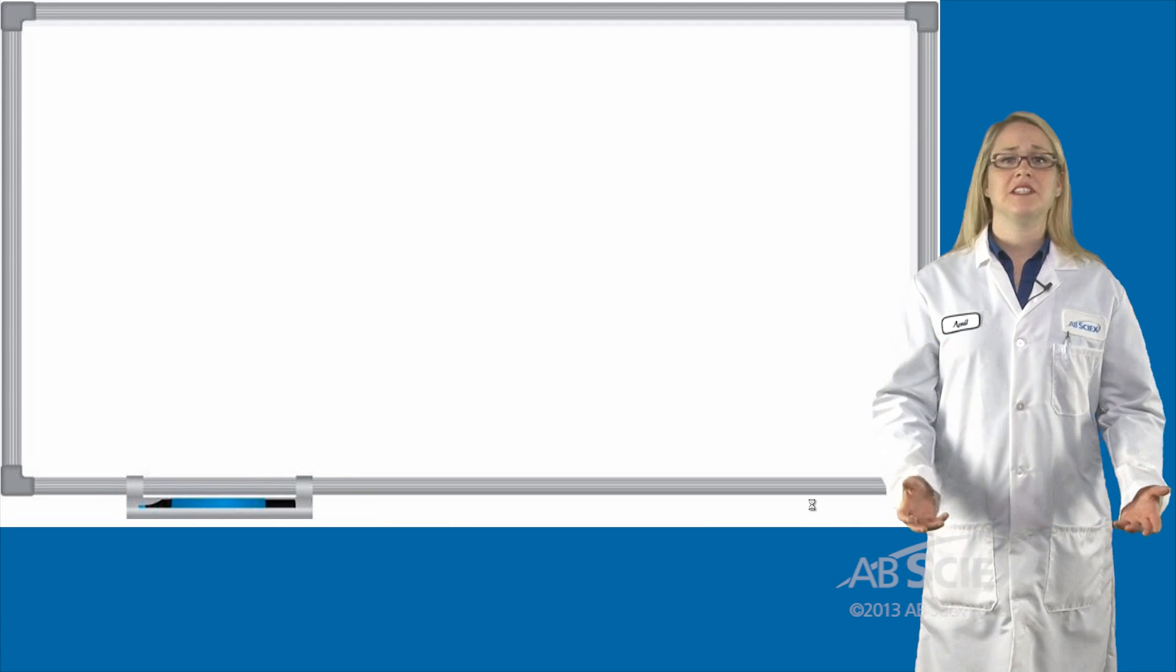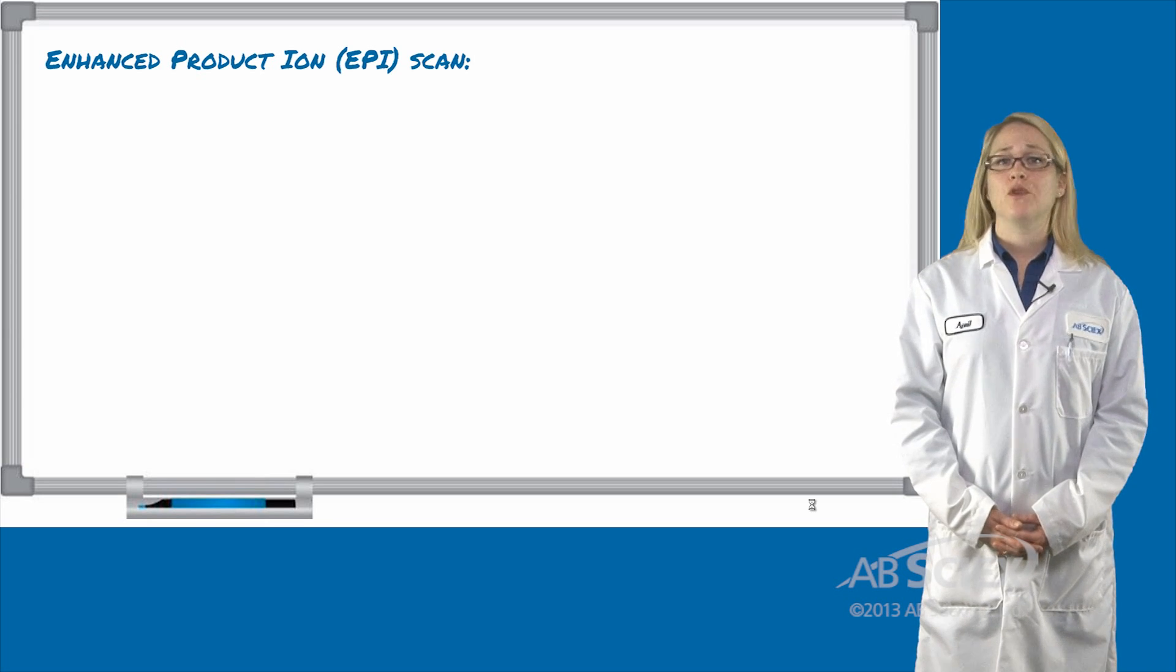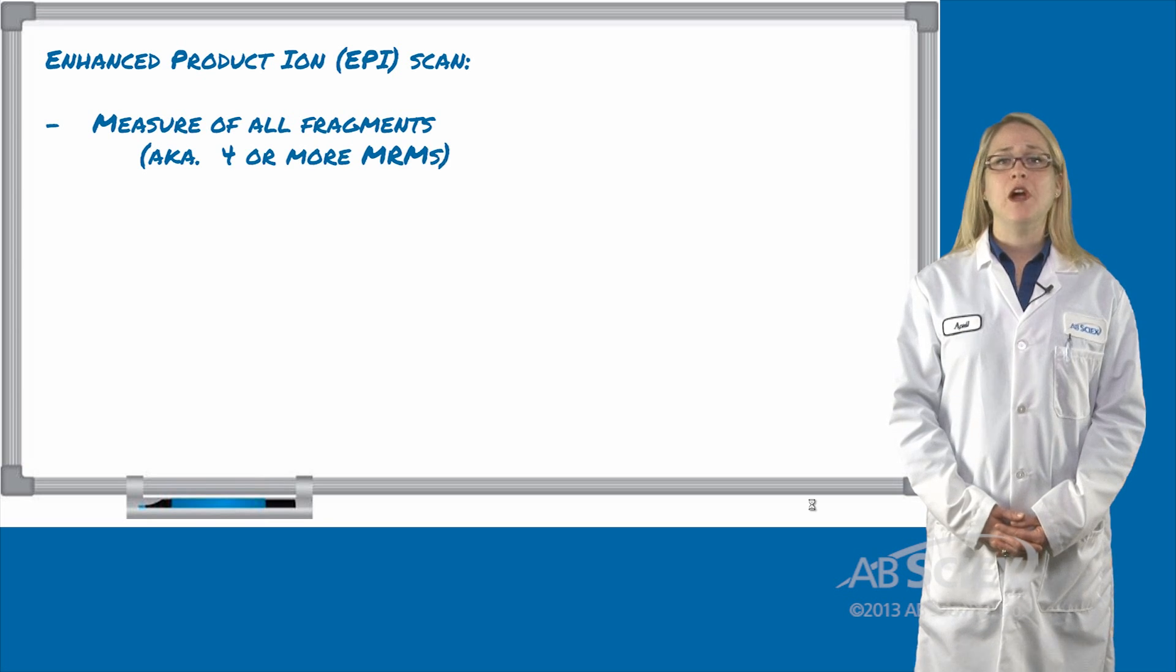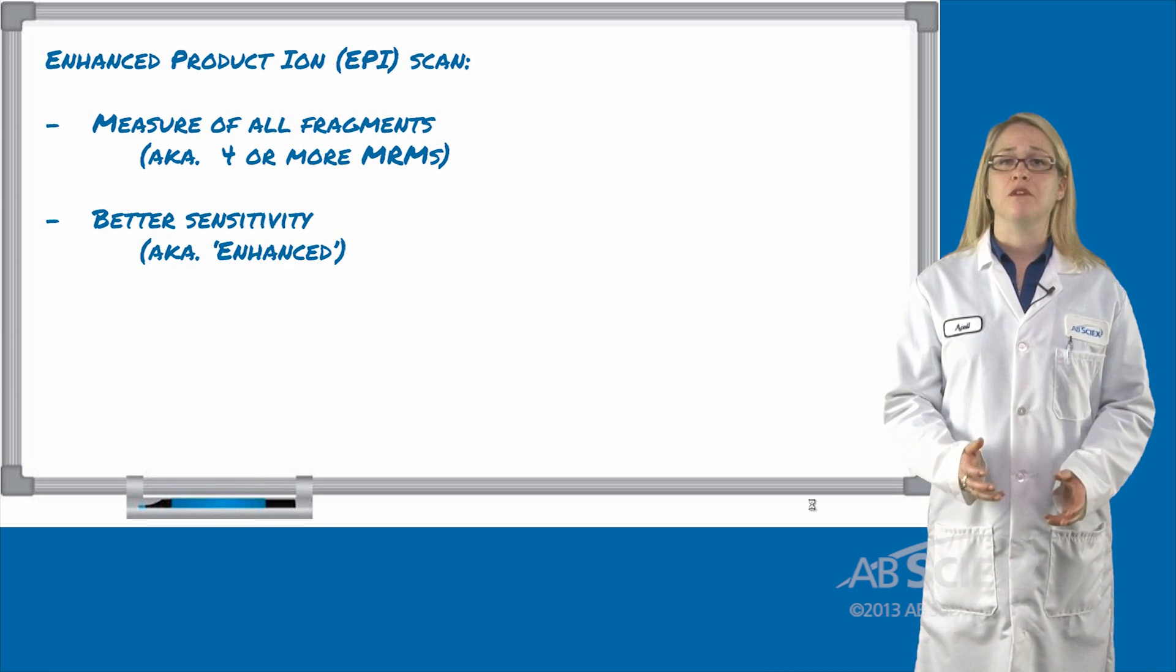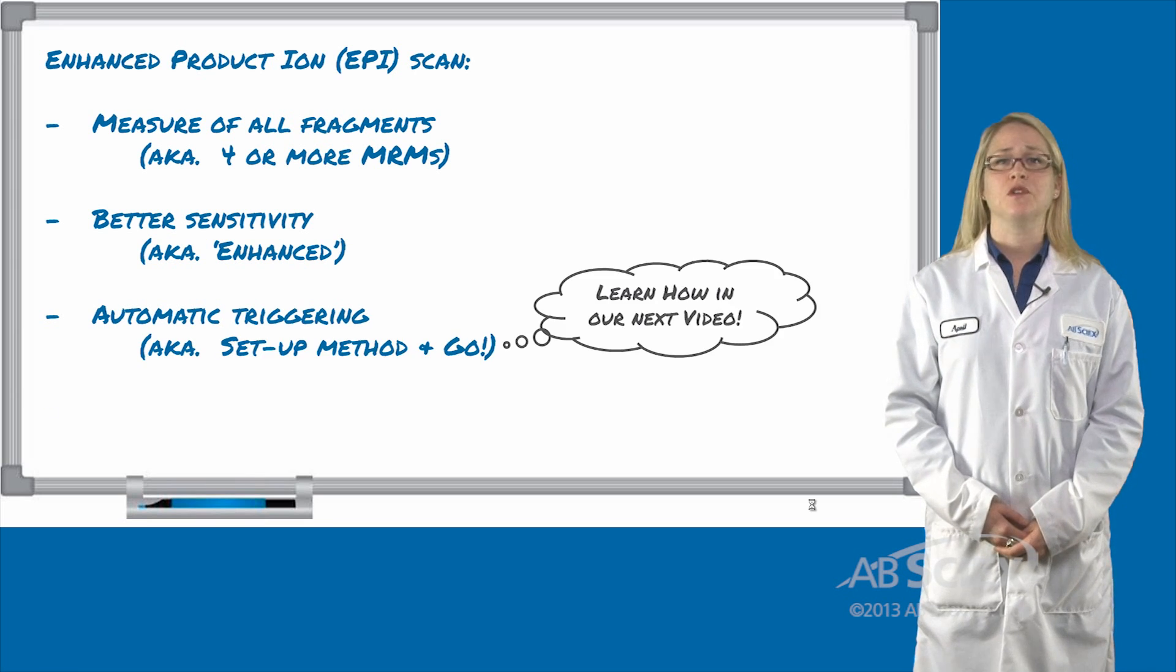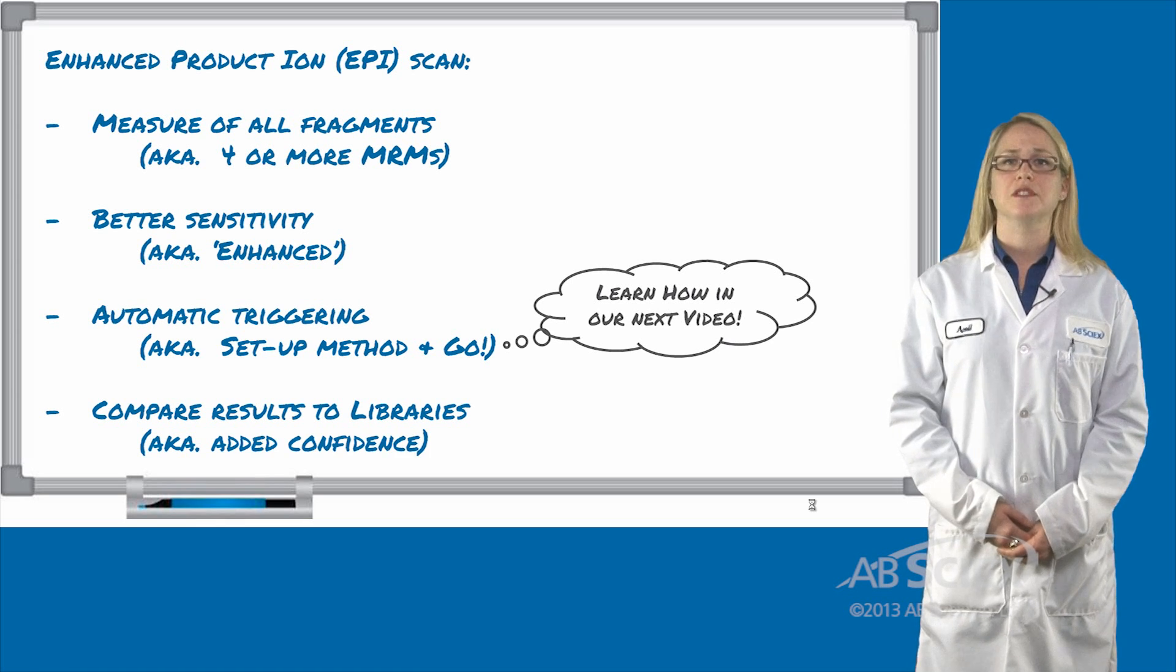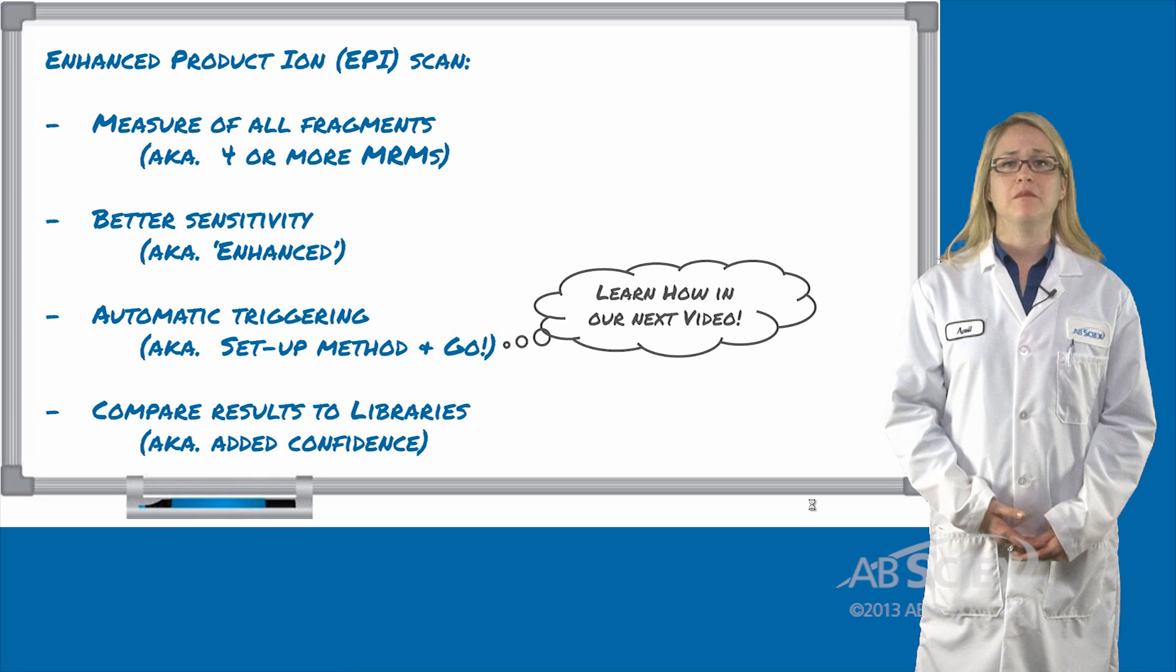So, what does this mean for you, and how can this EPI scanning business help you? Well, by creating your acquisition methods to collect EPI scans, you are able to detect more MS-MS fragments when a compound, or MRM, is detected. That means you will automatically acquire more information to identify and confirm those positive findings. You can also compare those MS-MS spectra to compound library spectra, which also helps to confirm positives.